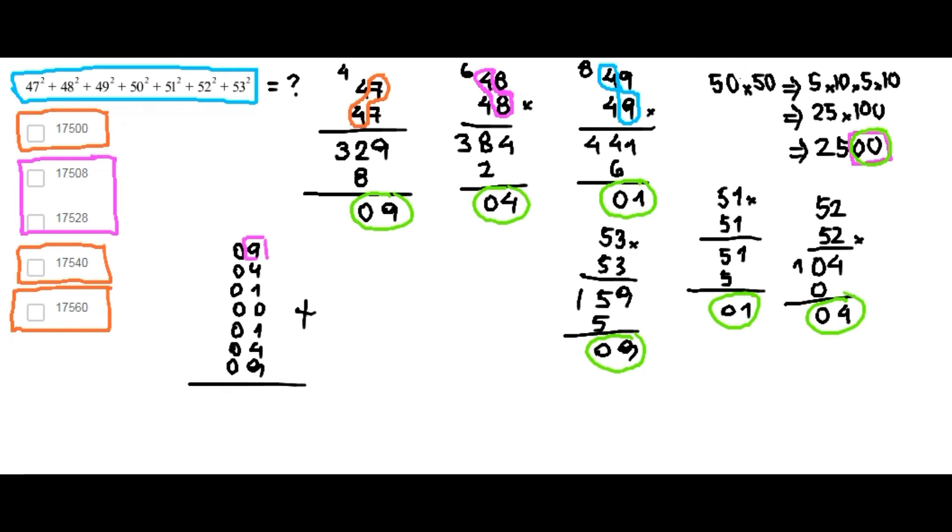Here we have 9 and 1, 10. 9 and 1, another 10. So, 20 and 20 plus 4, 24 plus 4, 28. So, here we have 28.